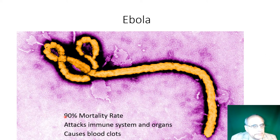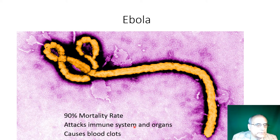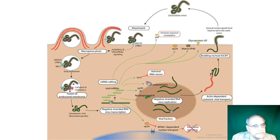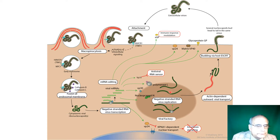Ebola has been mentioned a few times lately. This is an incredibly fatal disease — the mortality rate is around 90%. It attacks human immune systems and organs and causes blood clots, which is how it kills people. Here it is floating around ready to attack. It tricks a white blood cell into eating it — which is the white blood cell's job when encountering a foreign subject. But the Ebola virus protects itself against being digested, hijacks the protein synthesis machine, gets into the ribosomes to replicate itself, then exits the cell and goes on to infect others.